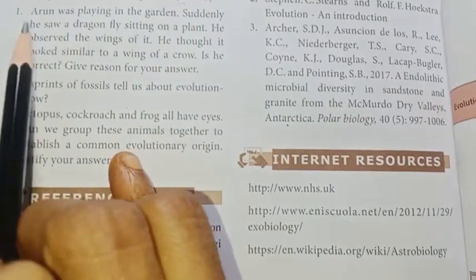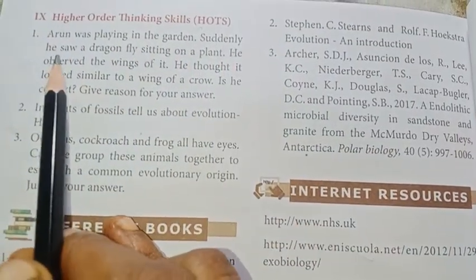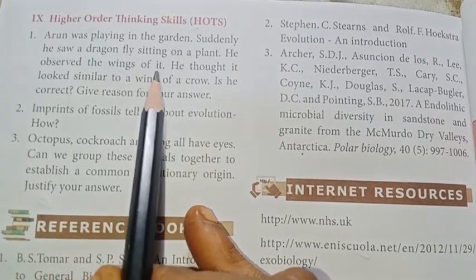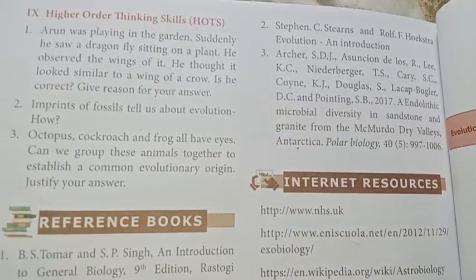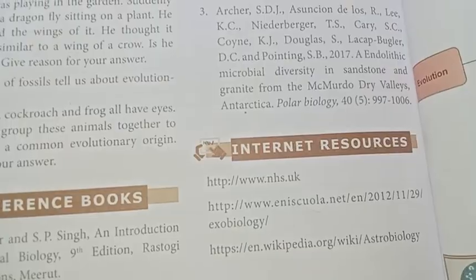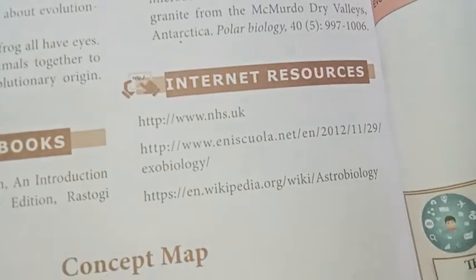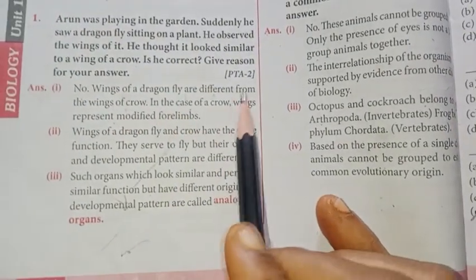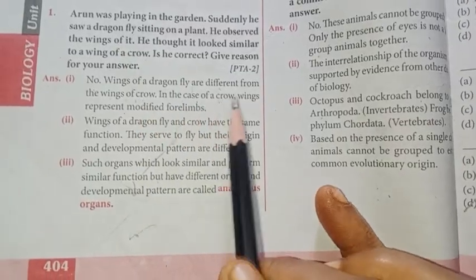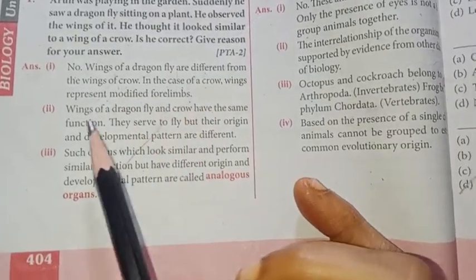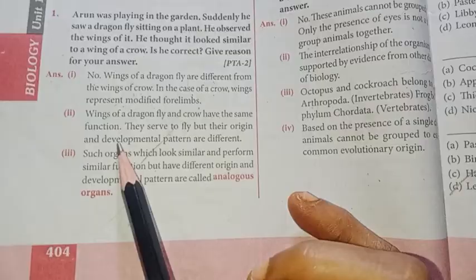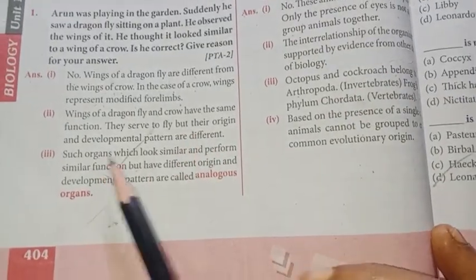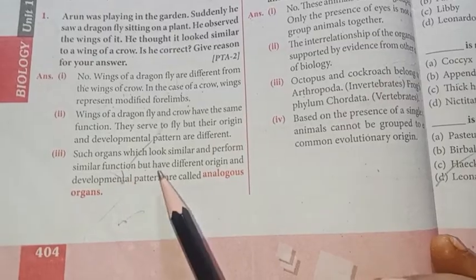A student saw a dragonfly sitting on a plant and observed the width of its wings. It looked similar to the wing of a crow. Is he correct? Wings of a dragonfly are different from the wings of a crow. In the case of a crow, wings represent modified forelimbs. The wings of a dragonfly and crow have the same function — they serve to fly — but their origin and developmental pattern are different. Such organs are called analogous organs.